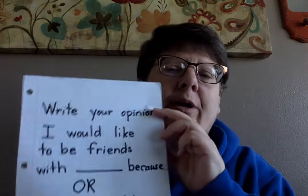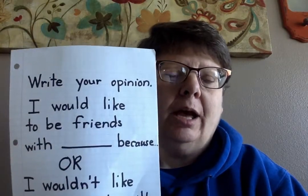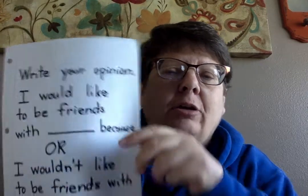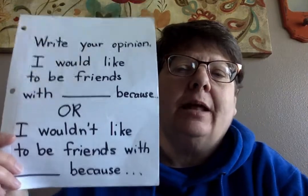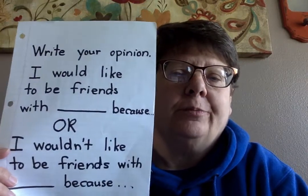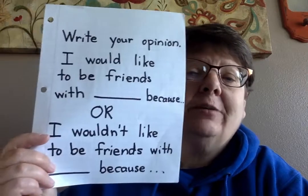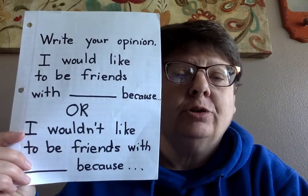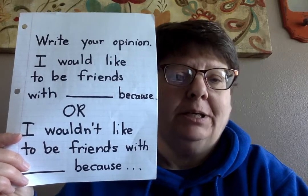In part three today, we are going to be writing your opinion about the book and the character. Here are two responses that you can use to tell us about the character. The first response you could choose is, 'I would like to be friends with blank because,' or you could choose, 'I wouldn't like to be friends with blank because.'